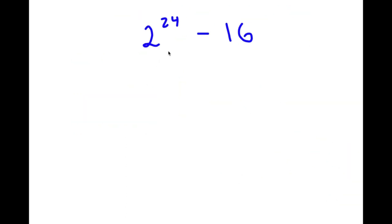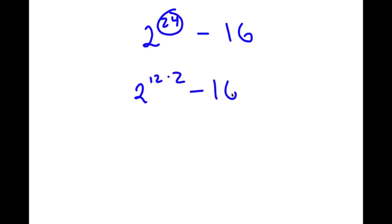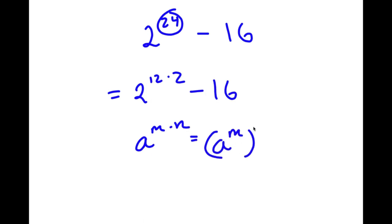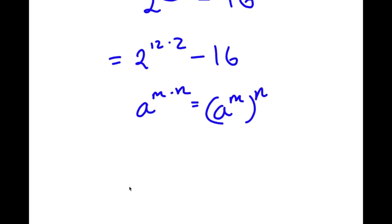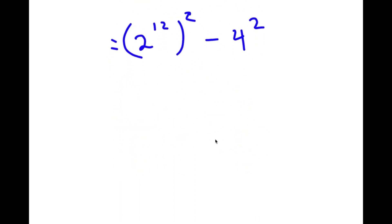In this problem, I have 2 to the power of 24 minus 16. To solve it, I'm going to first rewrite 2 to the power of 24 as 2 to the power of 12 times 2. Using the property a to the power of (m times n) equals (a to the power of m) to the power of n, this becomes (2 to the power of 12) squared. And 16 is the same thing as 4 squared.